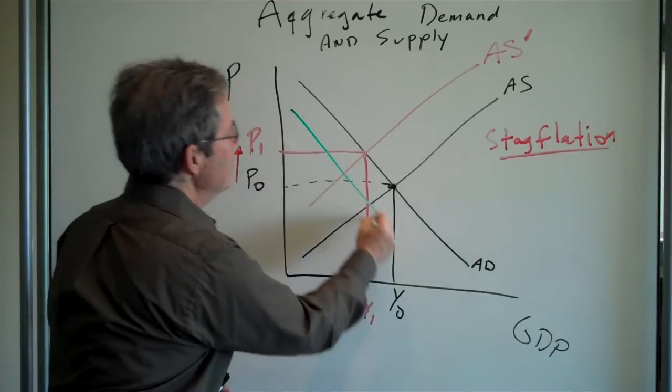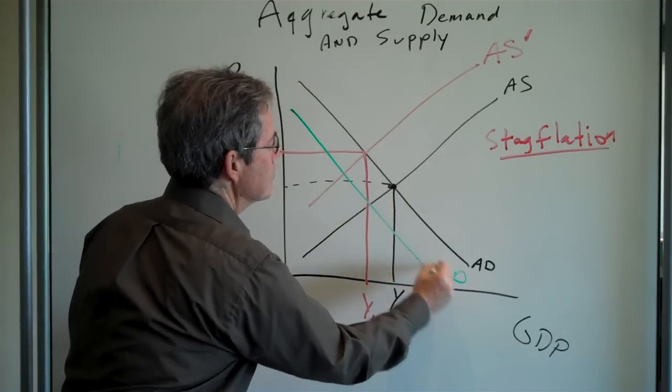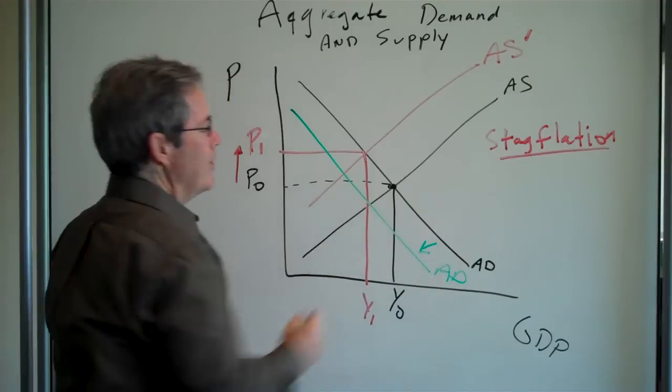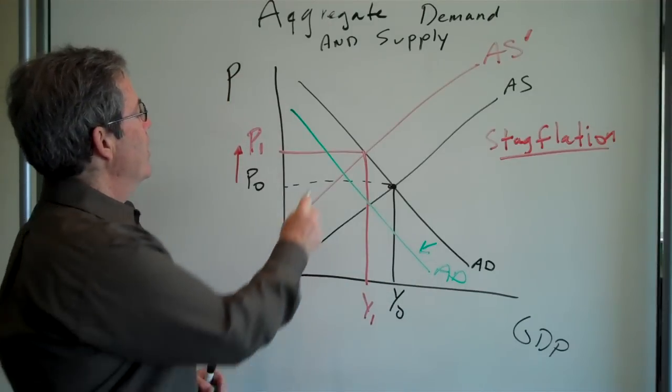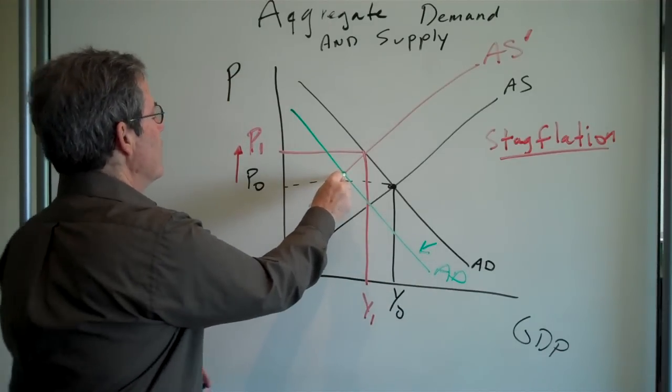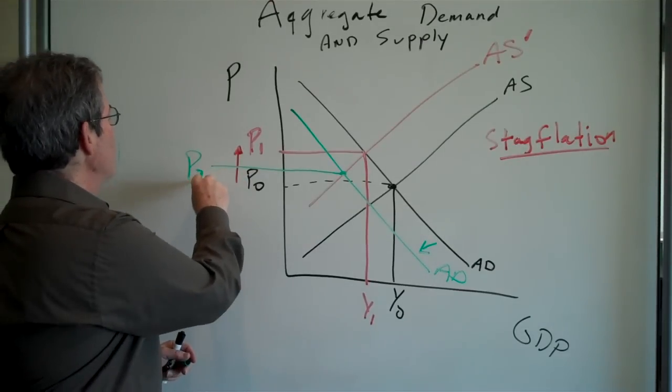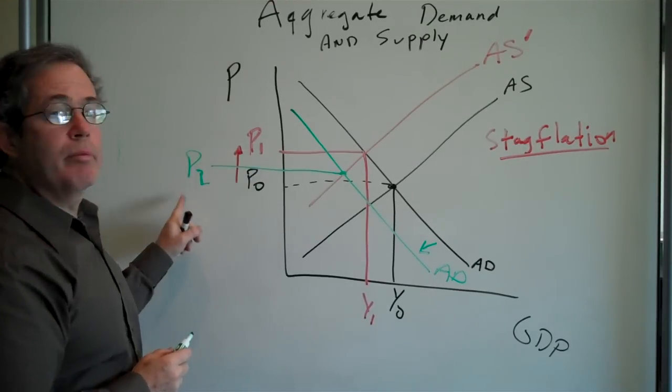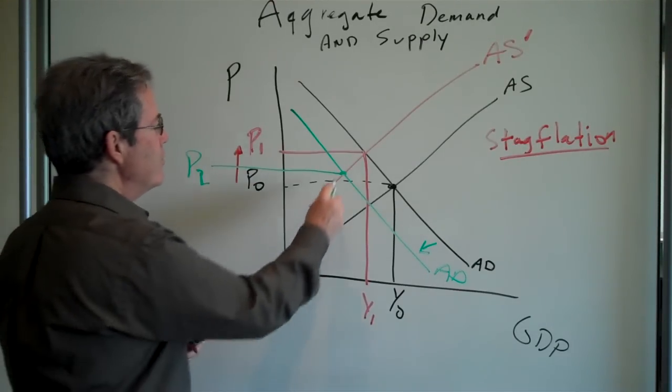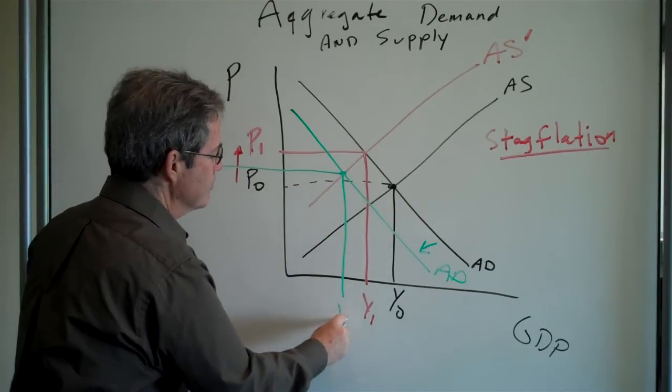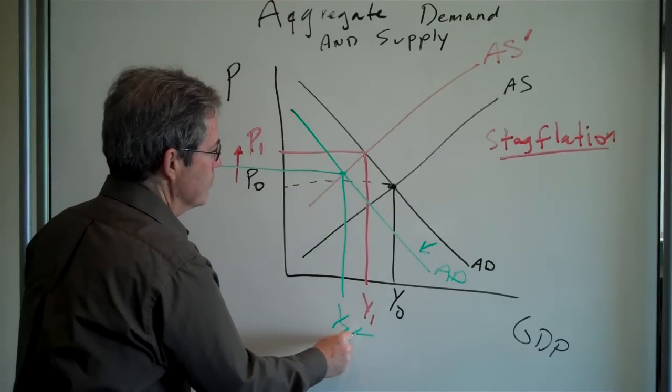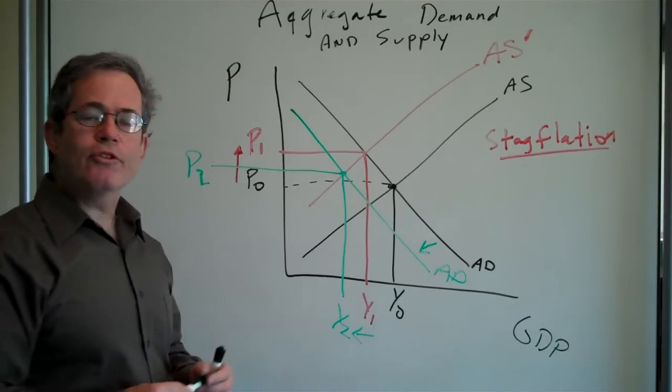And that will shift in the aggregate demand curve. Prices will fall from P1 to P2, but unfortunately, output will also fall.